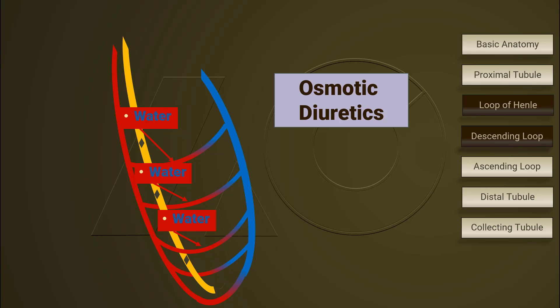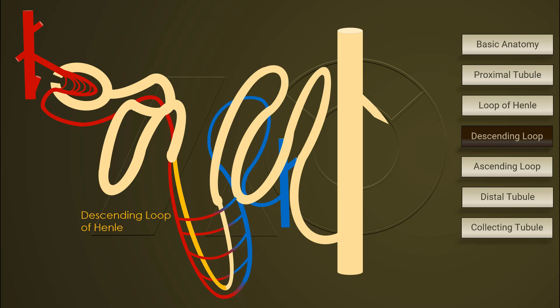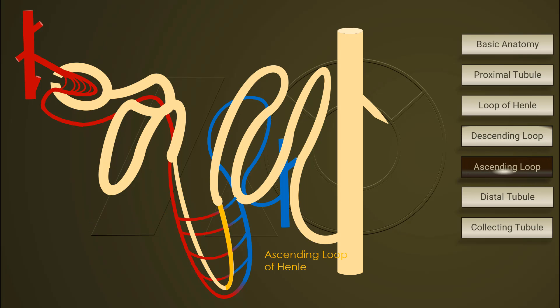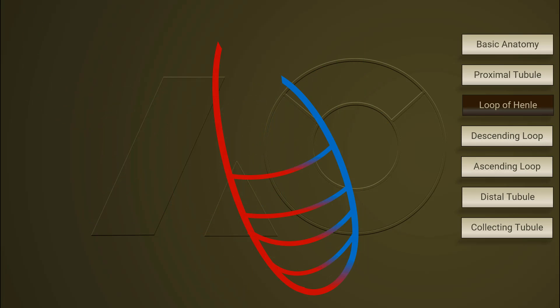Following descending loop of Henle is the ascending loop of Henle. Ascending loop of Henle is the major site for salt reabsorption and at the same time it is impermeable to water.